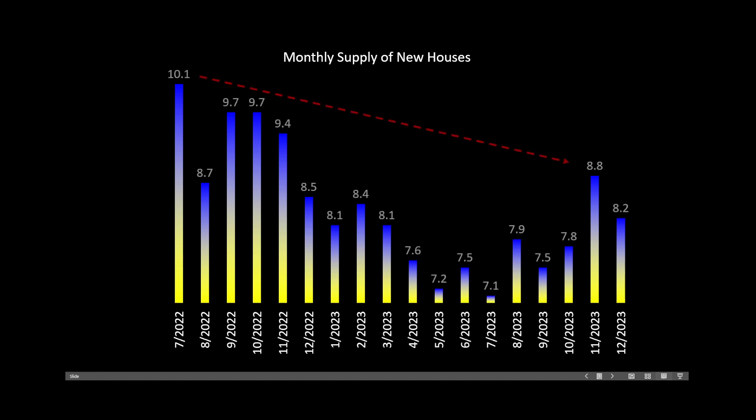Currently, the monthly supply of new homes has moved in the opposite direction. In July 2022 we had 10.1 months of inventory — following COVID lockdowns and pent-up inventory, some would say artificially high. That number has now dropped down to 8.2, after hitting lows of 7.1 earlier. While these numbers are relatively higher than past examples, no two economies are exactly the same. The lock-in effect is clearly present because we have very high interest rates and little sign that the Federal Reserve will cut rates — certainly not expected at the March meeting.